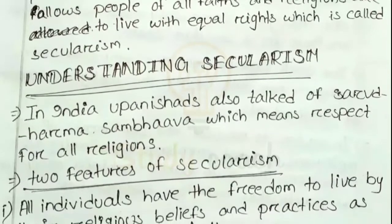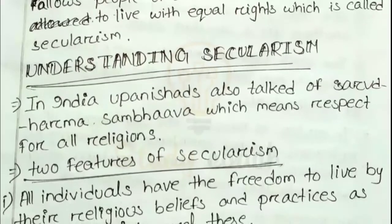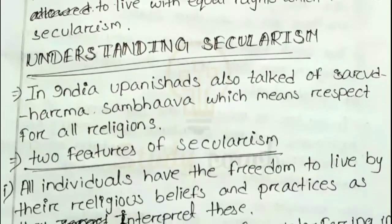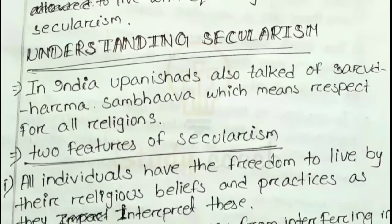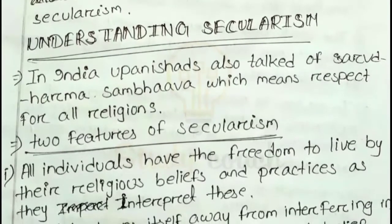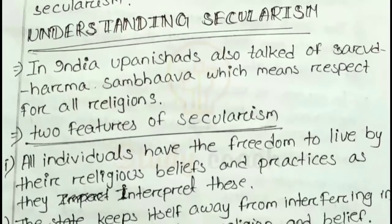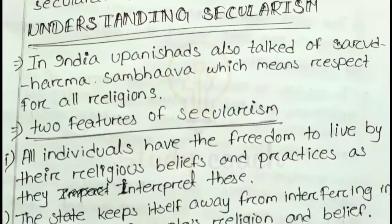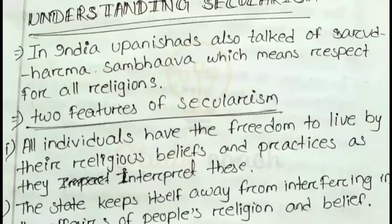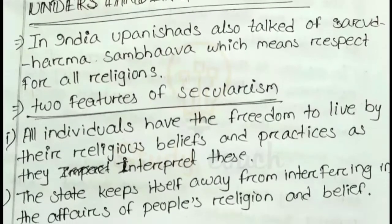Next, we discuss about the two features of secularism. The first feature is that all individuals have the freedom to live by their religious beliefs and practices as they interpret them. The second feature is that the state keeps itself away from interfering in people's religion and their beliefs — the state has no right to interfere in religion or people's belief.